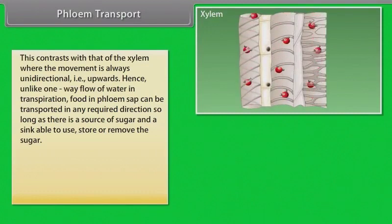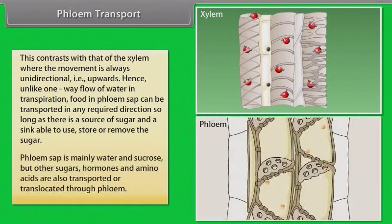Unlike the one-way flow of water in transpiration, food and phloem sap can be transported in any required direction, so long as there is a source of sugar and a sink able to use, store or remove the sugar. Phloem sap is mainly water and sucrose, but other sugars, hormones, and amino acids are also transported or translocated through phloem.